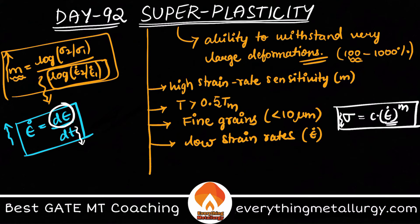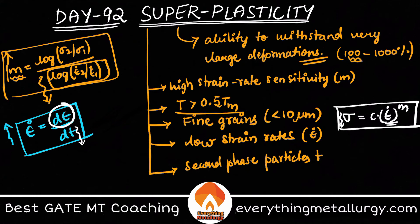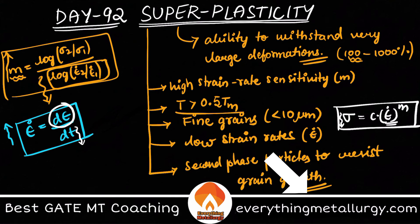If there are some second phase particles, because we are talking about higher temperatures, we have to actually resist grain growth. The second phase particles — dispersoids — provide some important creep resistance so that there won't be any grain growth. So, all these are important features to explain about superplasticity.